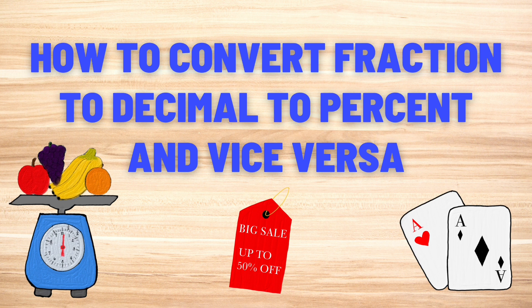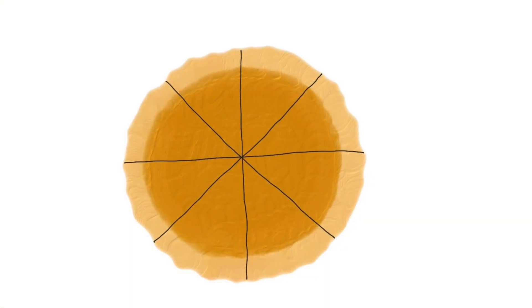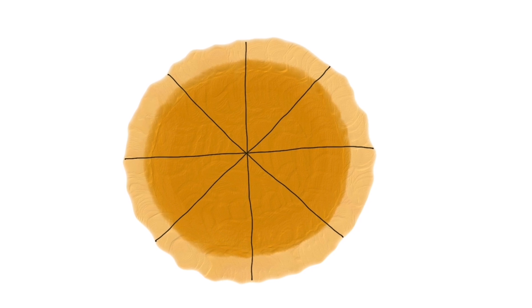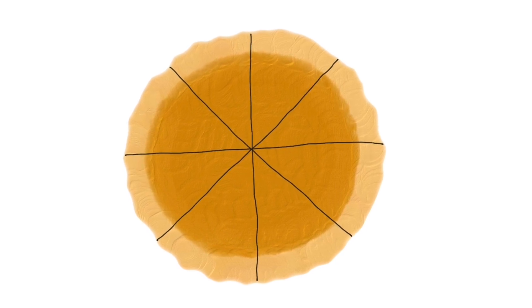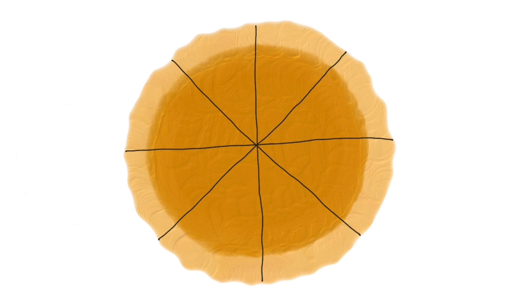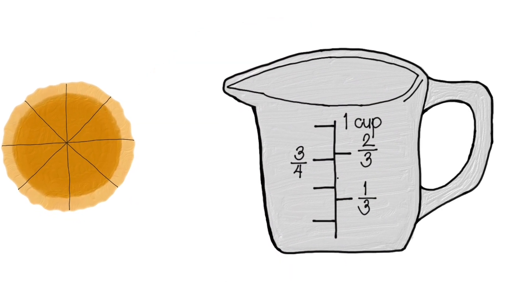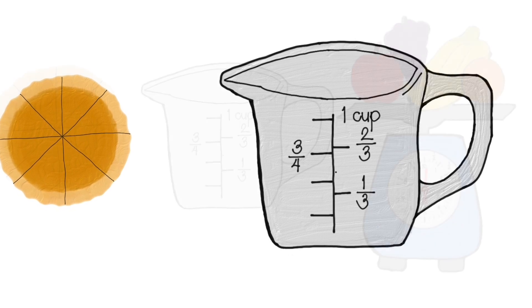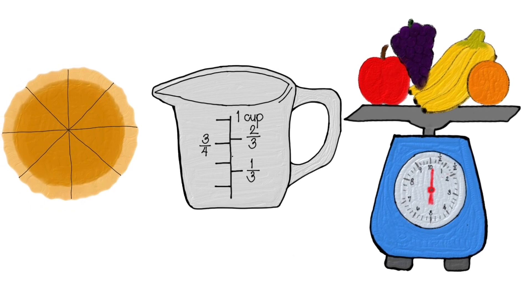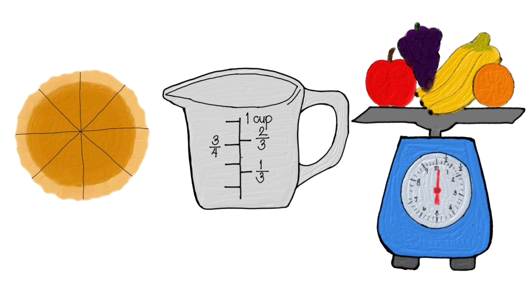In this video, we shall learn the application of fraction, decimal, and percent in real-life situations. When do we use fraction, decimal, and percent? We apply fraction in the following situations: when we divide a pie into equal parts to distribute to four children, when we measure the ingredients — solids or liquids — in baking a cake, or when we weigh the fruits, vegetables, or meat that we want to buy.